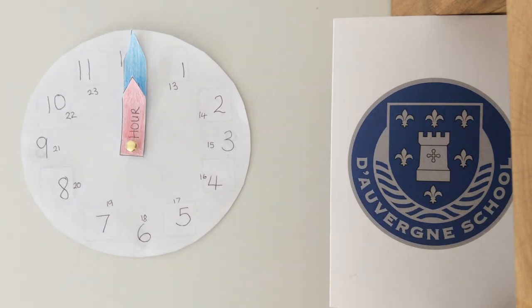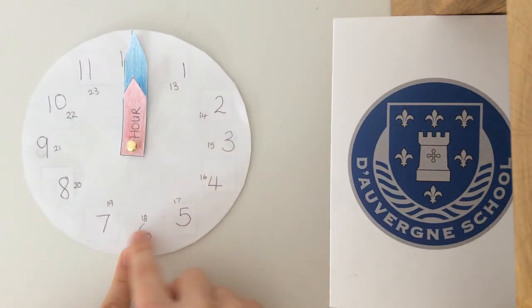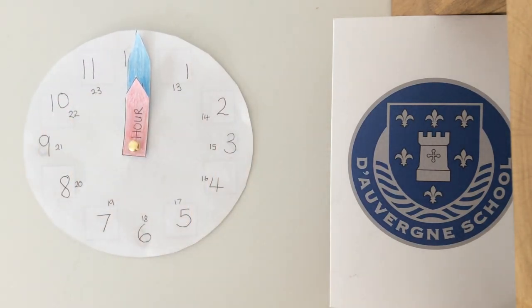We need to label the minutes on our clock face. First of all, how many minutes are in one hour? We should all know that there are 60 minutes in one hour. We have 12 points on our clock face as we can see by our numbers 1 to 12. So if we divide 60 minutes into 12 points, 60 divided by 12, have a go at working that out. 60 divided by 12 is 5.